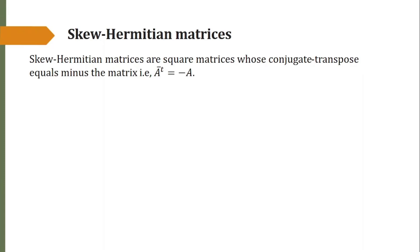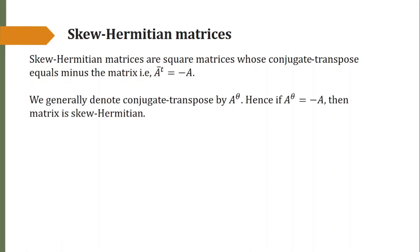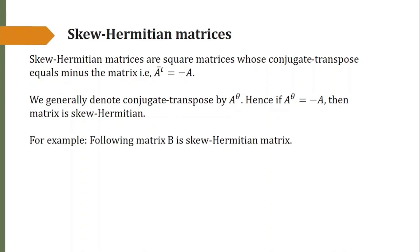Now we proceed to skew Hermitian matrices. These are the matrices whose conjugate transpose equals the minus of the original matrix — that is, A transpose conjugate is equal to minus A. As we know, we generally denote the conjugate transpose by A-theta, so if A-theta is equal to minus A, then the matrix is skew Hermitian. For example, the following matrix is a skew Hermitian matrix.